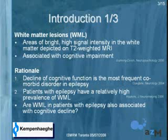Why are we interested in white matter lesions? The decline of cognitive function is one of the most frequent cognitive problems in epilepsy. It is known that patients with epilepsy usually have a relatively high prevalence of white matter lesions, so we wanted to investigate whether white matter lesions in patients with epilepsy were also associated with cognitive decline.